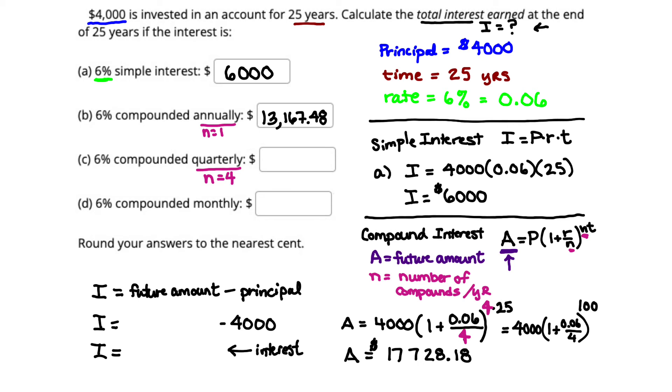Remember, this is our future amount. To get our interest, we take that future amount, $17,728.18, we subtract off 4,000, and that's going to give us $13,728.18. And that's the amount that goes in Part C, $13,728.18.